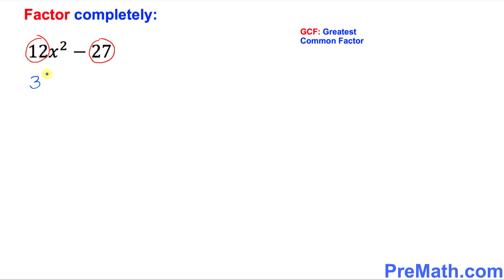So once you factor out 3 from this one, in parentheses we got 4x square minus 9. So far so good.